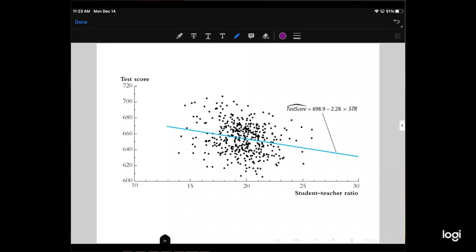This regression line says that if we set student-teacher ratios equal to 0 and extend this out, the intercept is 698.9, so this is an estimate of beta hat 0, and the slope is negative 2.28. This is an estimate of beta hat 1.